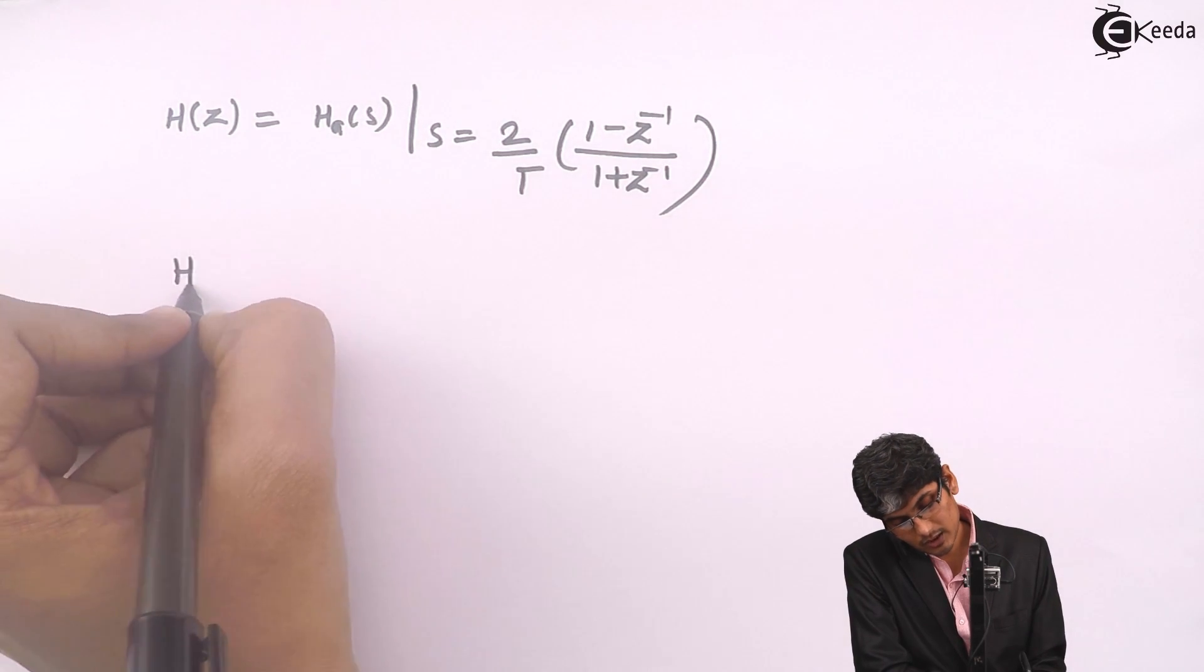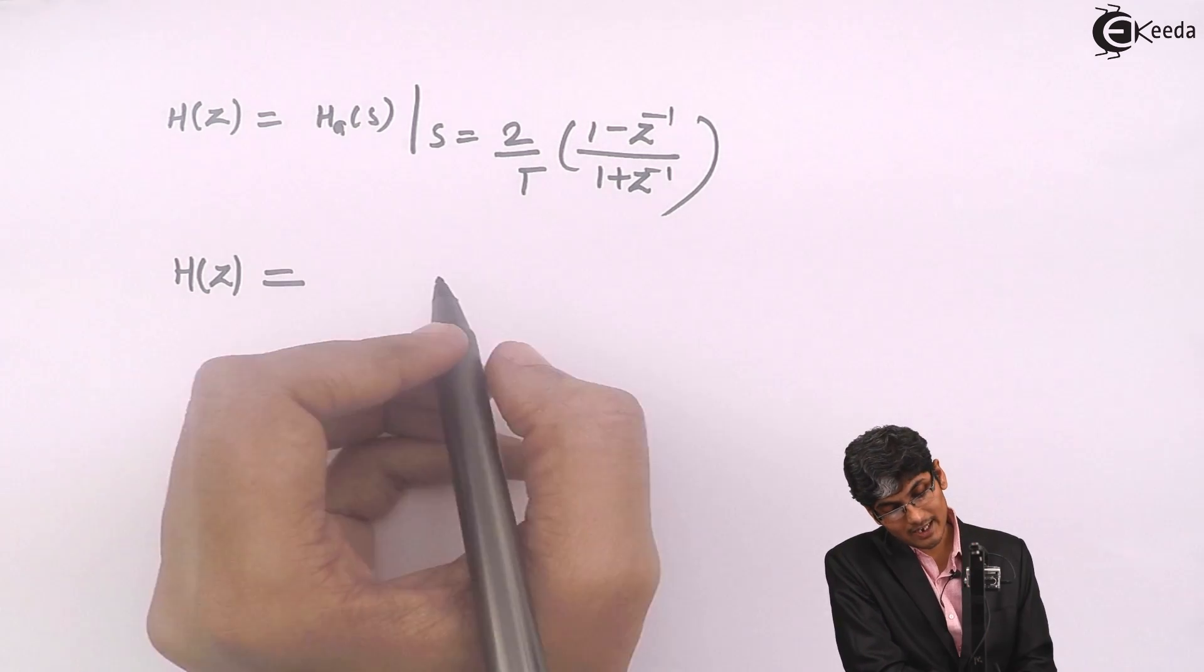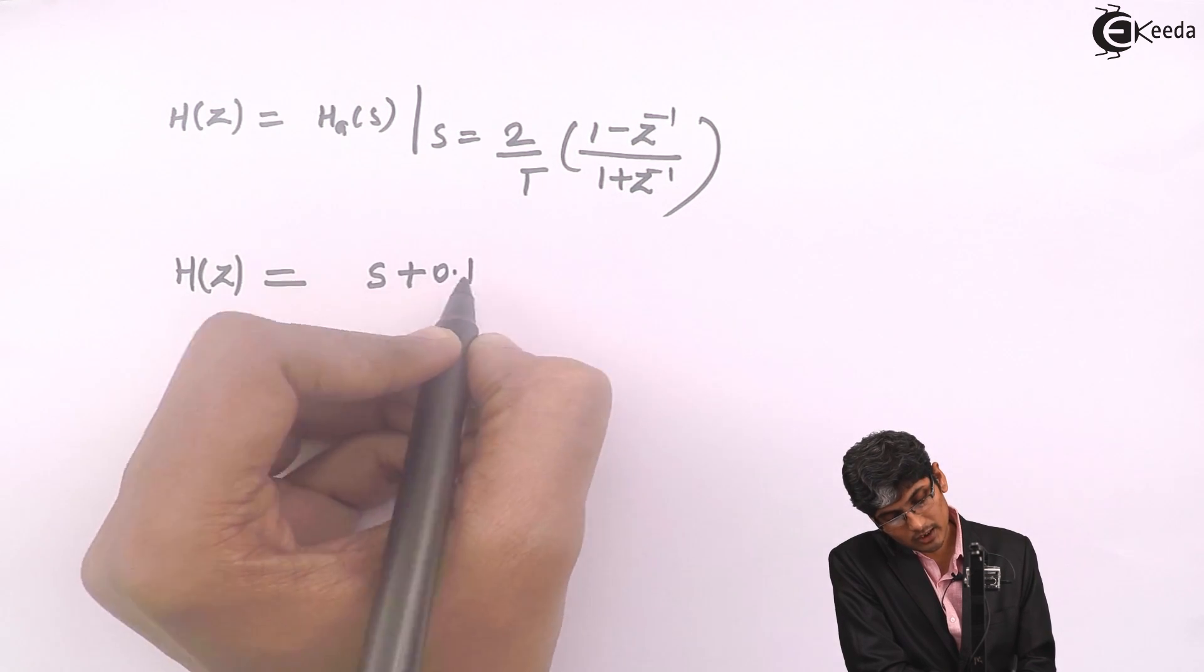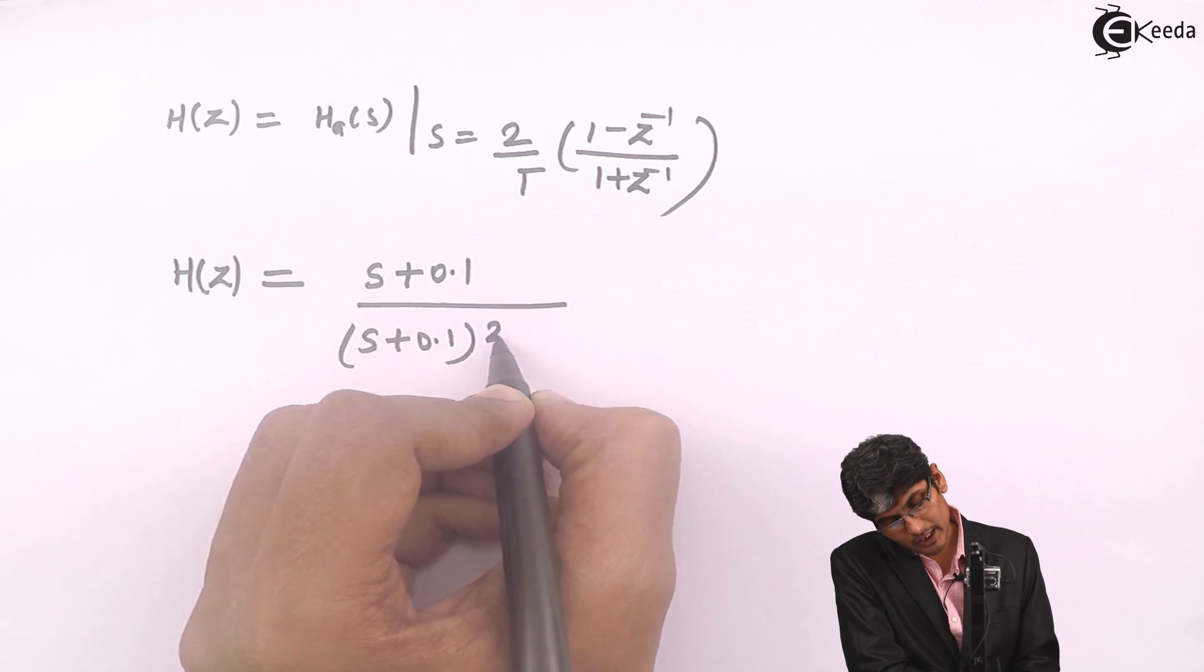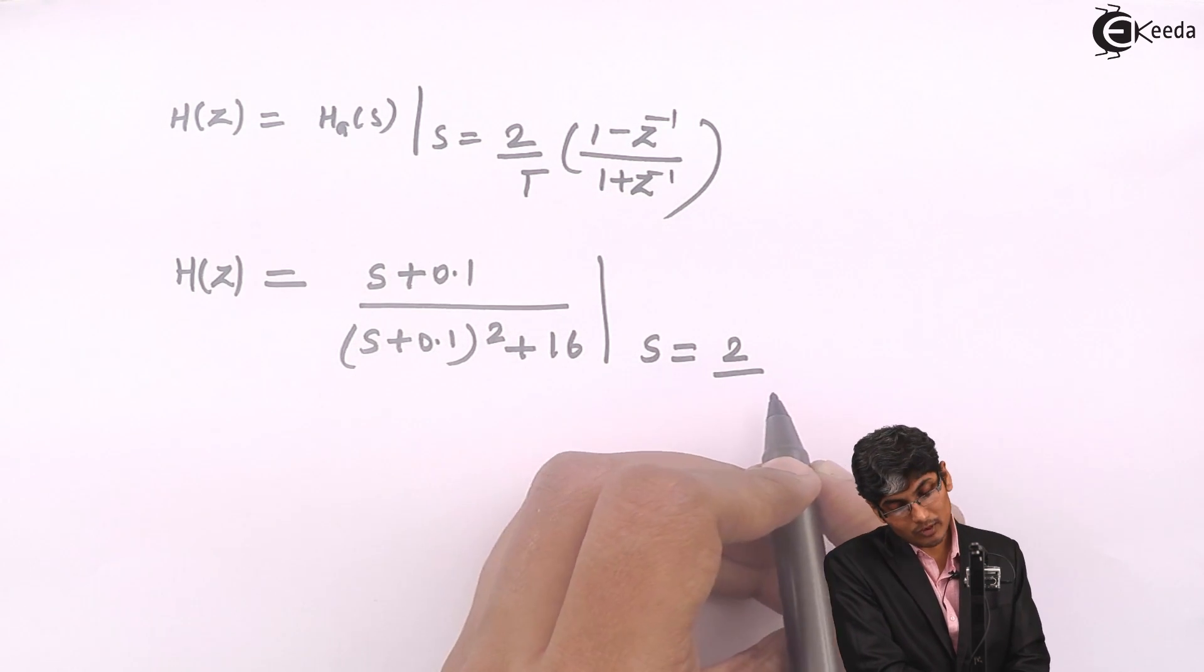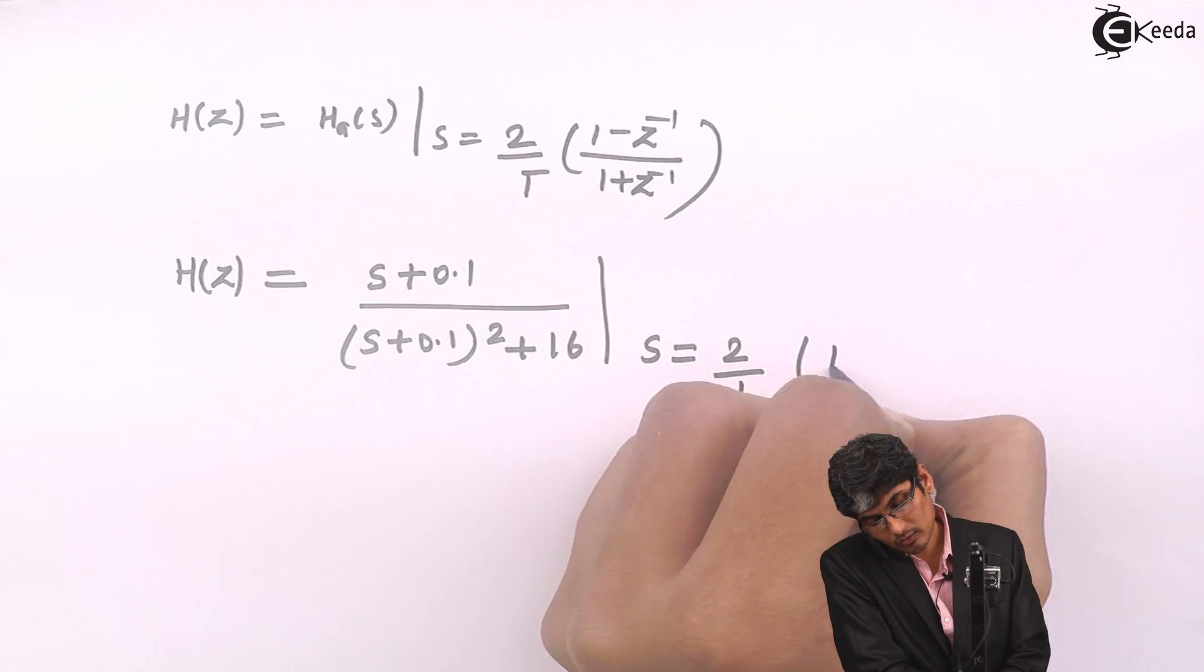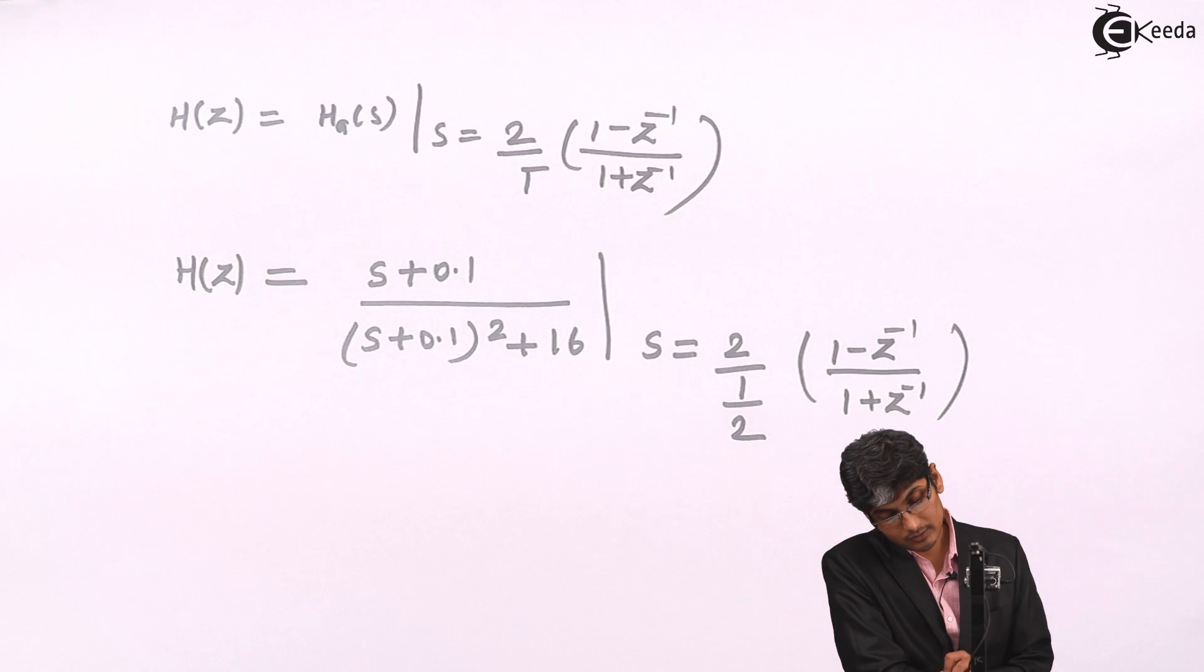So H of Z will be equal to our H A of S was S plus. So I will write first here, S plus 0.1 divided by S plus 0.1 the whole square plus 16 and I have to substitute S as 2 by T is 1 by 2. So it will be 1 by 2 which will be 4 ultimately. So 1 minus Z inverse upon 1 plus Z inverse.